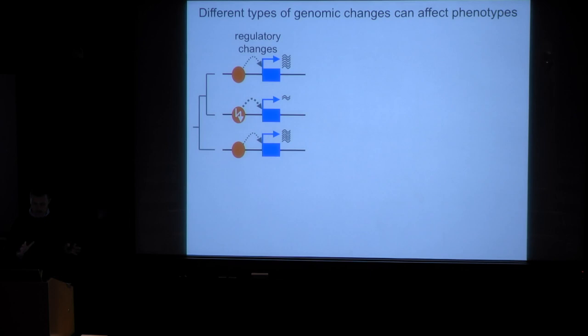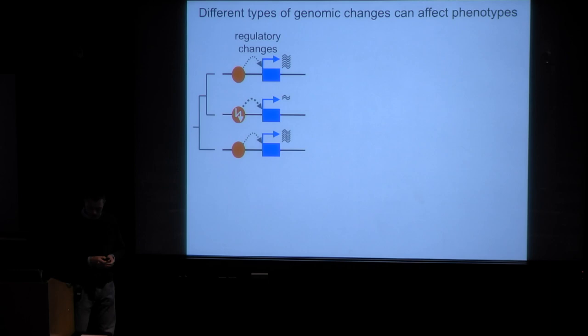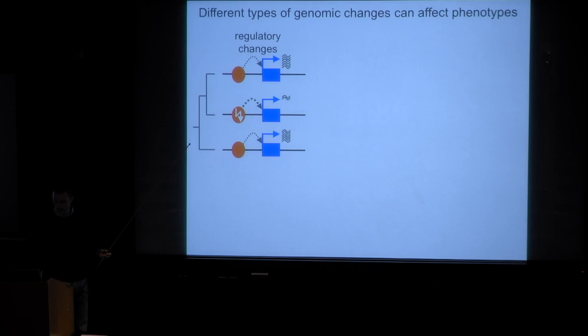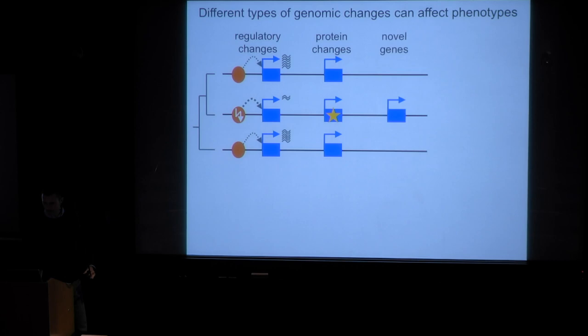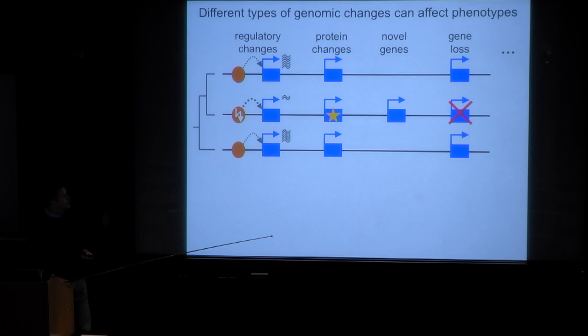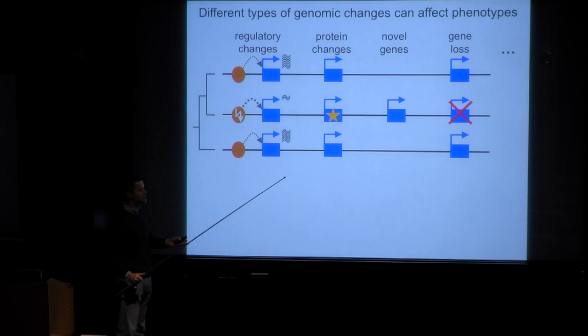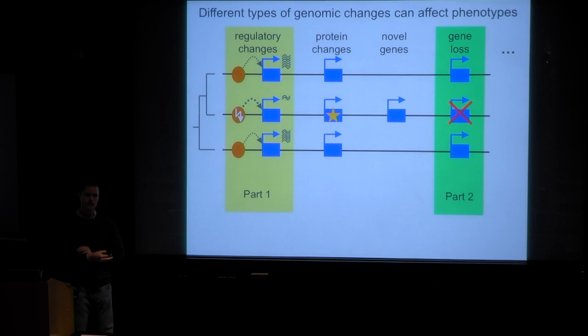Conceptually, it makes sense to think of different types of genomic changes that can affect molecular function and therefore may contribute to phenotypic differences. You could imagine that changes in regulatory elements lead to differences in the expression pattern of a gene or novel expression patterns. Changes in the protein-coding sequence can affect protein function. Novel genes can arise by duplication or de novo. Ancestral genes can get lost in evolution, and there are many other types of changes.